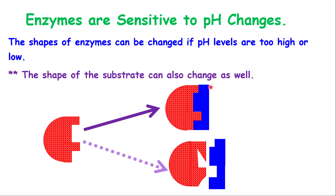Another property is that enzymes are sensitive to pH changes. Generally, the shape of enzymes can be changed if pH levels are too high or too low, which will damage the structure of the enzyme. The shape of the substrate can also be changed, but generally the pH level will affect the enzyme. If the enzyme is at its optimal pH level, it will create a good and fast reaction. However, if the pH is too high or too low, the shape of the enzyme is changed — hence the substrate or food cannot lock into it and there will be no reaction.